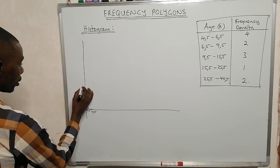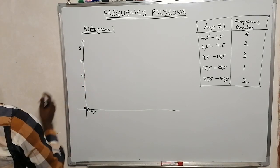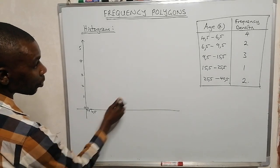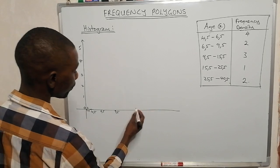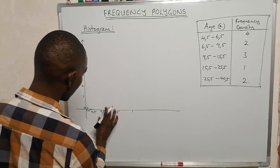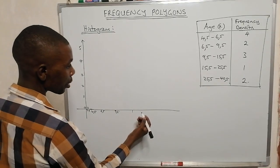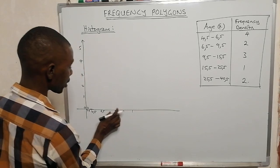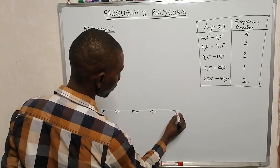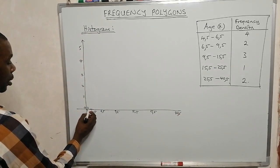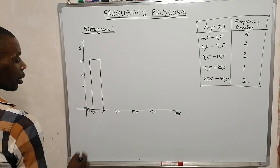On the y-axis we use 0, 1, 2, 3, 4, 5. On the x-axis we mark: 4.5, 6.5, 9.5, 15.5, 25.5, and 40.5. You can use an accurate scale. Note the spaces between class boundaries differ because the class widths are unequal.